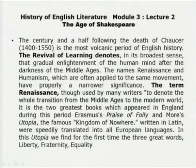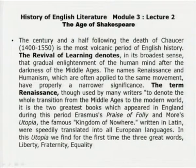While doing the Age of Shakespeare, we must understand what the Renaissance is. The terms 'renaissance' and 'humanism,' often applied to the same movement, have a narrower significance. It was a new humanism — a new exploration of the self — where mental boundaries were almost broken, and specific geographical, physical, and every form of area was explored. In England, two greatest books appeared: Erasmus's Praise of Folly and Thomas More's Utopia, written in Latin and later translated into all European languages.